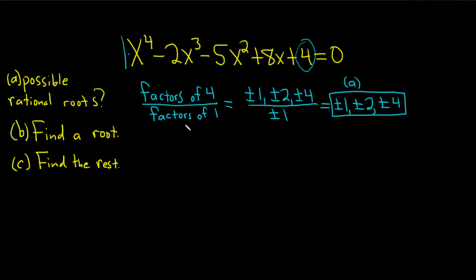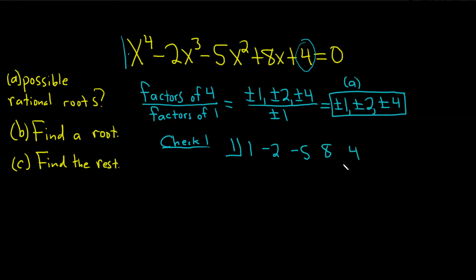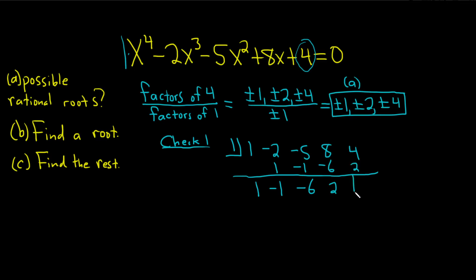Let's start by trying the number 1. To check 1, you put a 1 here, and then you write down the coefficients of your polynomial: 1, negative 2, negative 5, 8, and 4. Then you draw a line and start the synthetic division process. Bring down the 1. 1 times 1 is 1. Add and get negative 1. Negative 1 times 1 is negative 1. Add and get negative 6. Negative 6 times 1 is negative 6. Add and get 2. 2 times 1 is 2. Add and get 6.